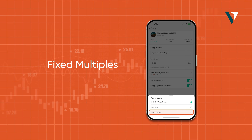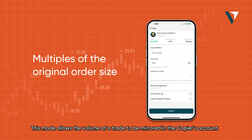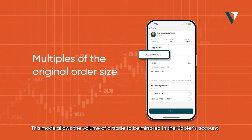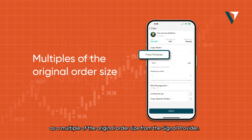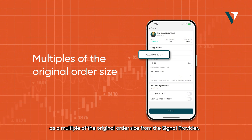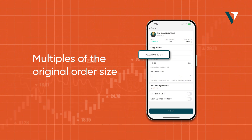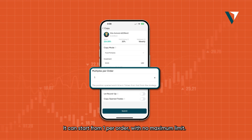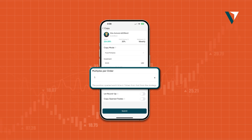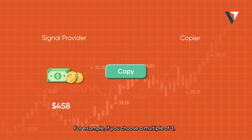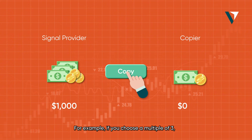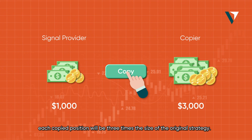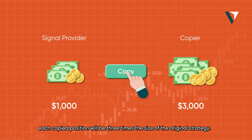Lastly, Fixed Multiples. This mode allows the volume of a trade to be mirrored in the copier's account as a multiple of the original order size from the signal provider. It can start from one per order with no maximum limit. For example, if you choose a multiple of three, each copied position will be three times the size of the original strategy.